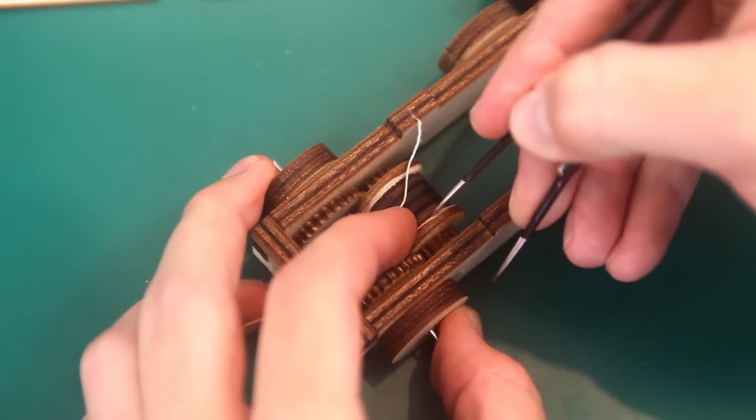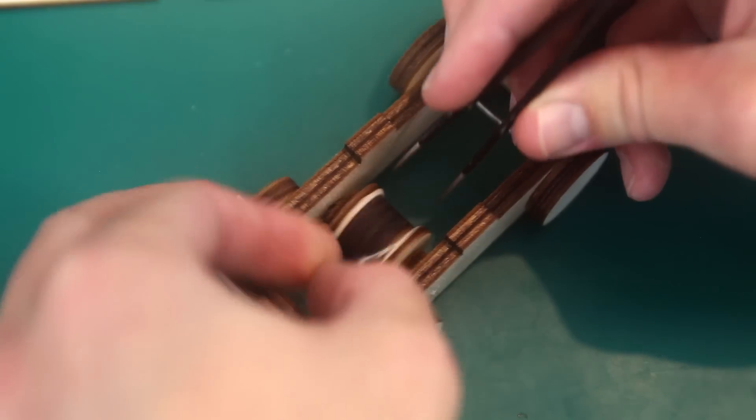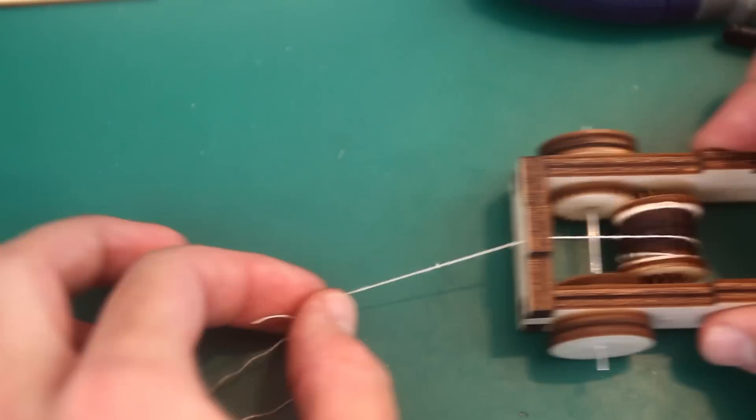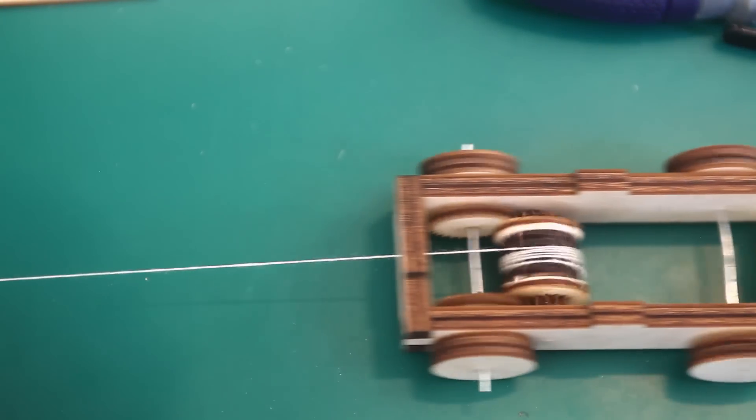And now I'm going to make a little gap between the flange, push the string in, and then I'm going to squeeze it together. And now we can roll the string up. And then we can pull the string and the car drives forward.